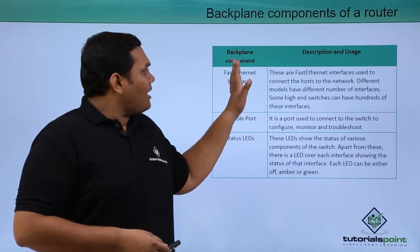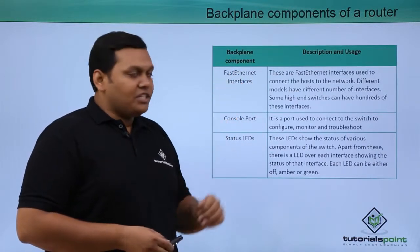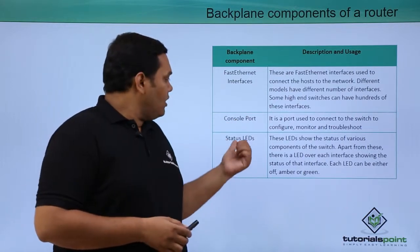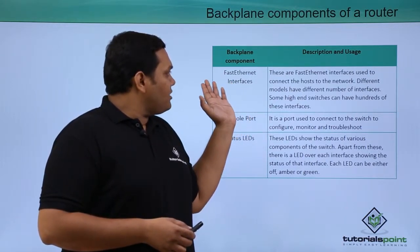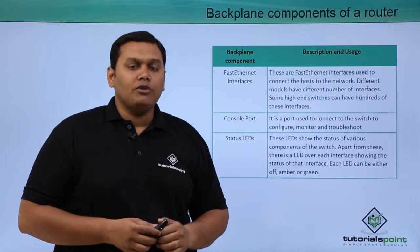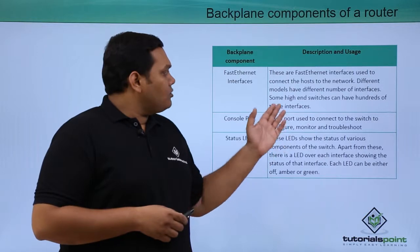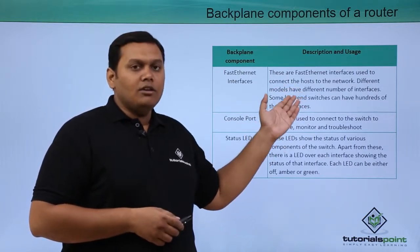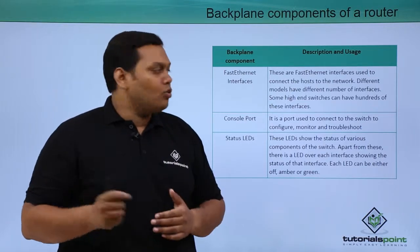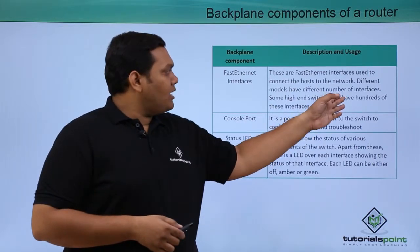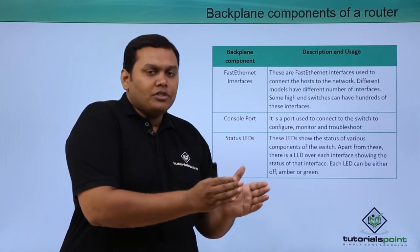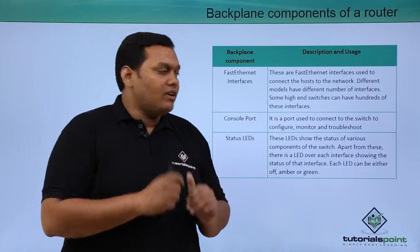Looking at the front panel components, you can see the fast Ethernet interfaces, the console port, and the status LEDs. The fast Ethernet interfaces are used to connect hosts directly to the network, making it easy to troubleshoot connectivity issues between hosts and servers. The number of interfaces available depends on the model.